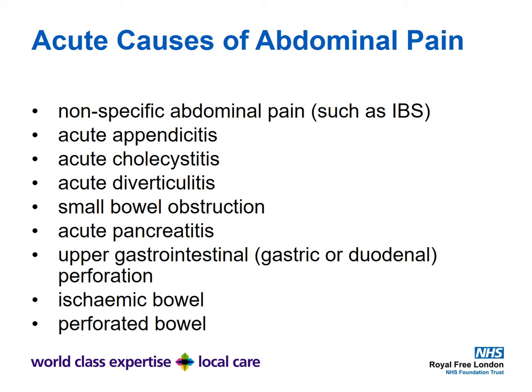Before we get to the syndrome of irritable bowel, it's important to appreciate the more acute and serious causes of abdominal pain. Only about 50% will be non-specific abdominal pain such as IBS or functional dyspepsia, so it's important to exclude the others — for example: acute appendicitis, cholecystitis, diverticulitis, small bowel obstruction, acute pancreatitis, upper gastrointestinal or duodenal perforation, ischemic bowel, and perforated bowel.